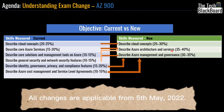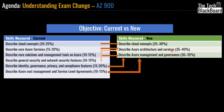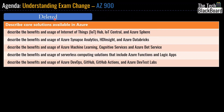All these changes will be applicable from 5th May 2022. The first section removed from AZ-900 is Describe Core Solutions Available in Azure — this section is now completely removed. After 5th of May you won't see questions around Internet of Things, Azure Synapse Analytics, HD Insight, Azure Machine Learning, Cognitive Services, or Bot Services. Similarly, serverless computing solutions including Azure Functions and Logic Apps will be missing, as will Azure DevOps, GitHub, GitHub Actions, and Azure Dev Test Lab.